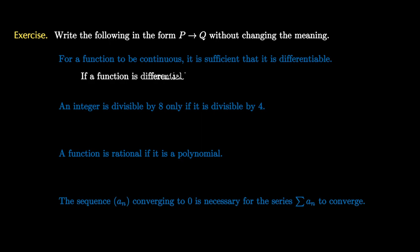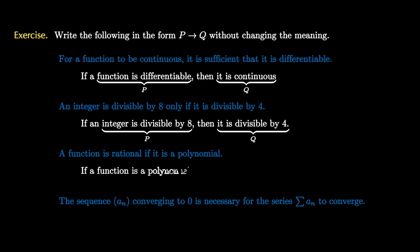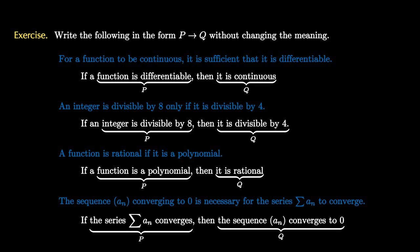In the first example, it is: if the function is differentiable, then it is continuous. In the second, the hypothesis is 'the integer is divisible by 8' and the conclusion is 'it is divisible by 4.' In the third, the hypothesis is 'the function is a polynomial' and the conclusion is 'it is rational.' And in the fourth, we determine that if the series converges, then the sequence must converge to zero. Note that all of these propositions are true as written.